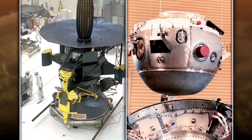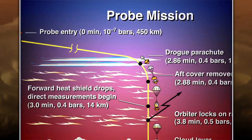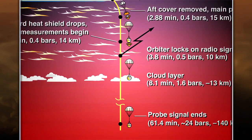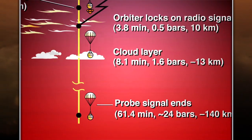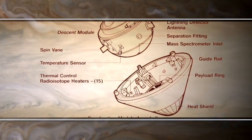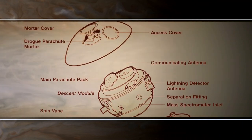Hotspots have been previously studied by the Galileo atmospheric probe. In 1995, the spacecraft released a probe that descended into Jupiter's atmosphere, specifically at a hotspot. This probe made the first and only in-situ measurements of Jupiter that exist today.